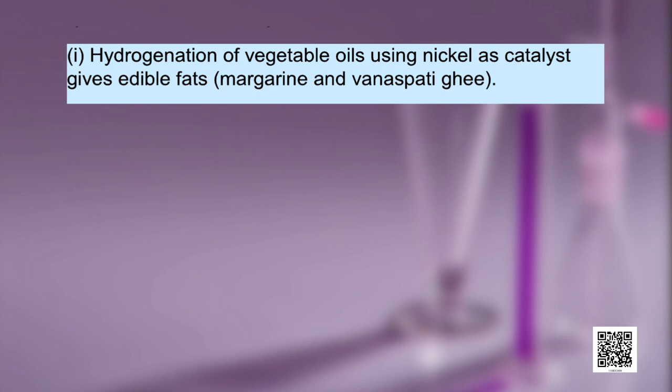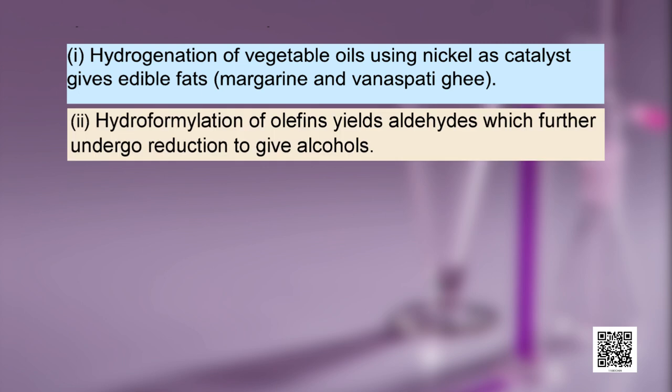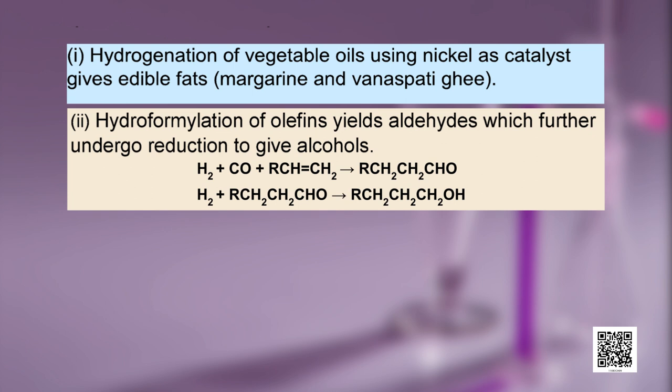Reactions with organic compounds: dihydrogen reacts with many organic compounds in the presence of catalysts to give useful hydrogenated products of commercial importance. For example, hydrogenation of vegetable oils using nickel as a catalyst gives edible fat products such as margarine and vanaspati ghee. The second reaction is hydroformylation of olefins, which yields aldehydes that on further reduction give alcohols. These two reactions are: hydrogen plus carbon monoxide plus olefin gives aldehyde, and dihydrogen reacts with aldehyde to give alcohol.